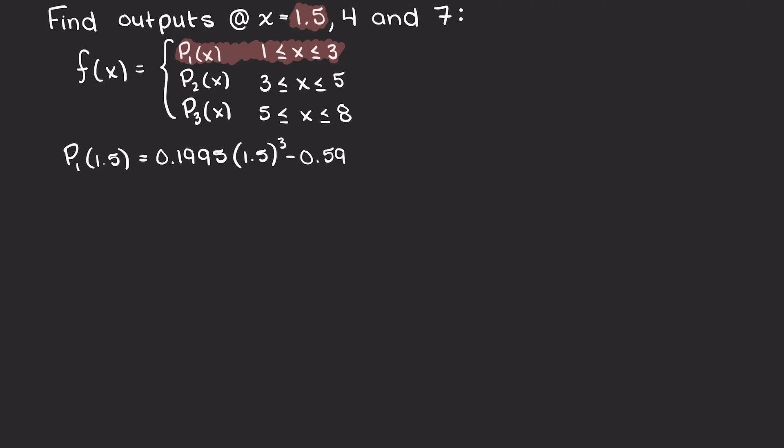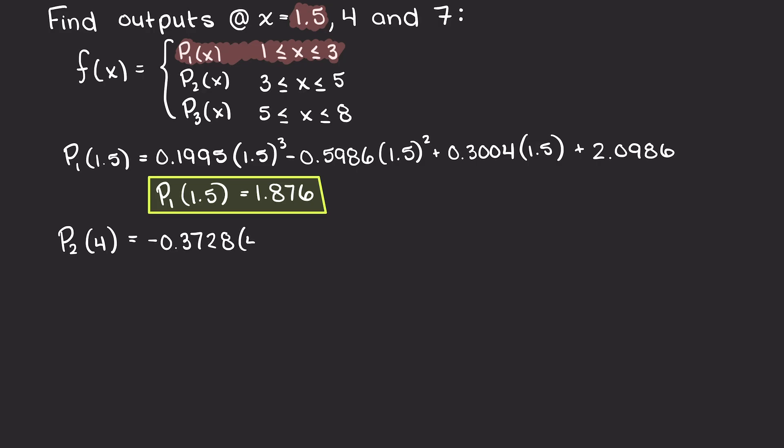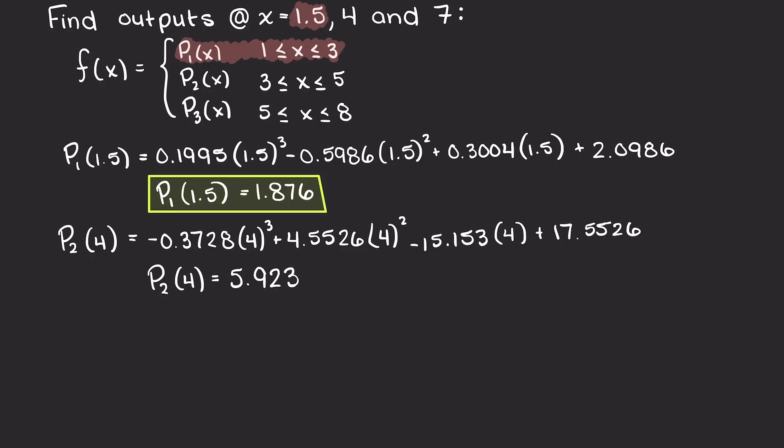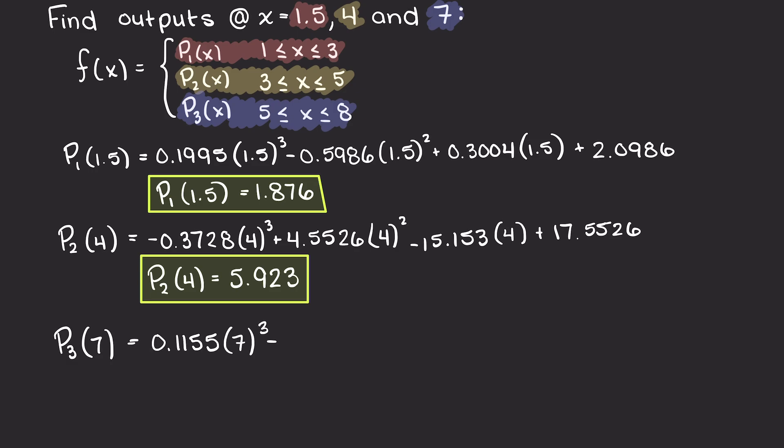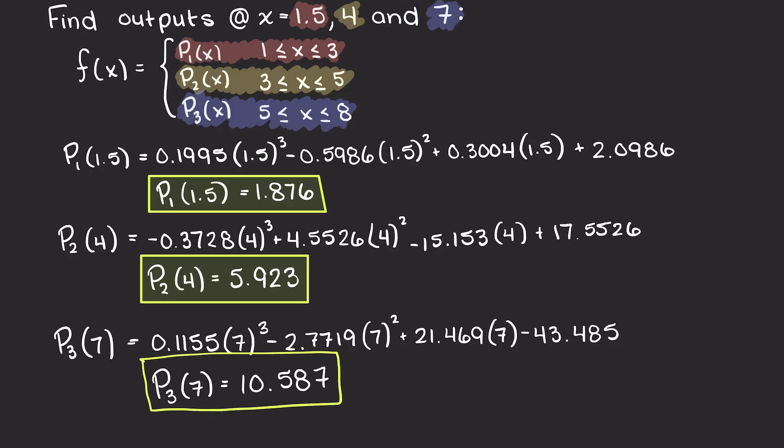For an input of 1.5, we are going to be using our first interpolating polynomial based on our domains. This results in an output of 1.876. Secondly, for an input of 4, it falls on our second interpolating polynomial, which has an output of 5.923. Lastly, for our input of 7, we will use our third and final interpolating polynomial. This results in an output of 10.587, and we have now answered all the questions that we are being asked.